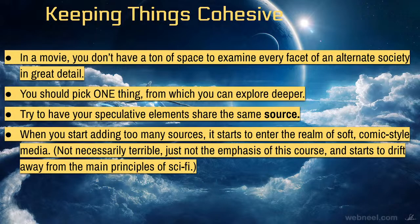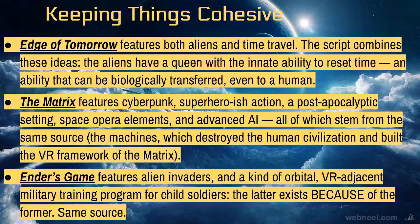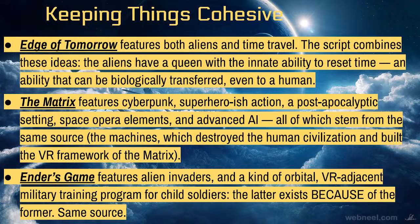With anime, the rules are somewhat out the window, but in Western stories this is generally how it works. The Matrix, for instance, has cyberpunk superhero action, post-apocalyptic settings, space opera adjacent elements, and advanced AI — but within that first film, everything stems from the same source: the machines, and the matrix itself, which those same entities created.